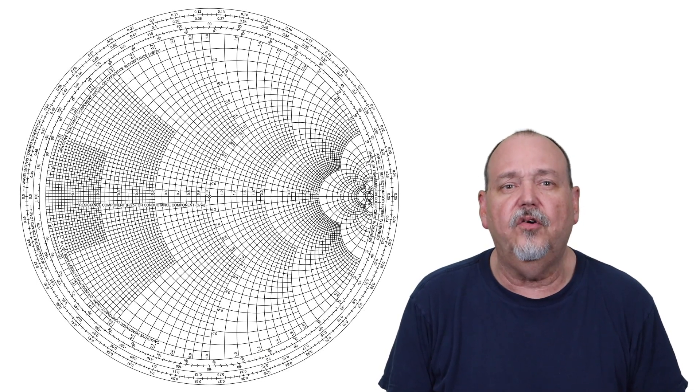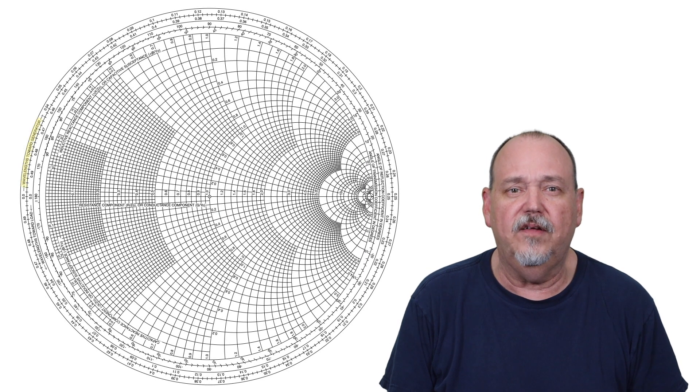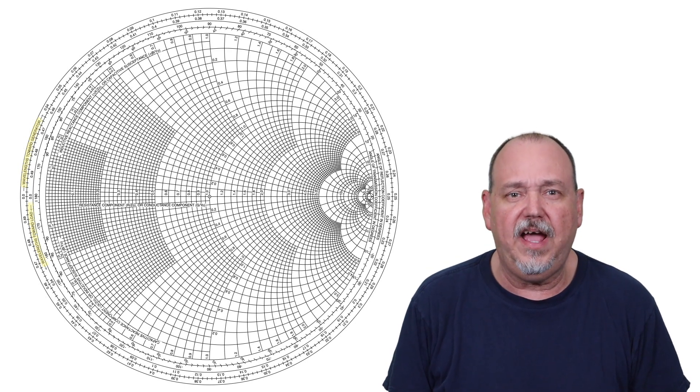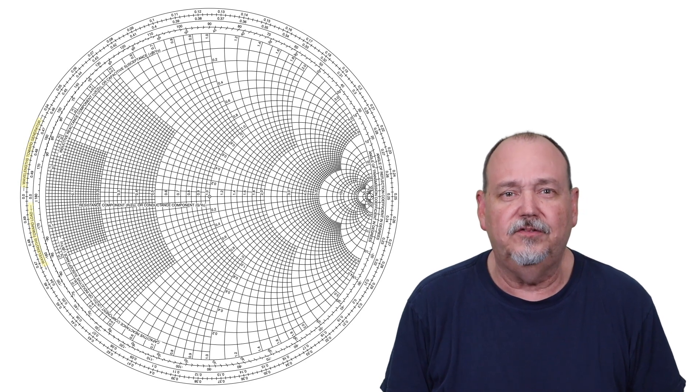You see the scale going around the outside. The outer says wavelength toward generator, and the next one says towards load. Basically, as you rotate around this chart halfway, it equals one-quarter wavelength of transmission line change.